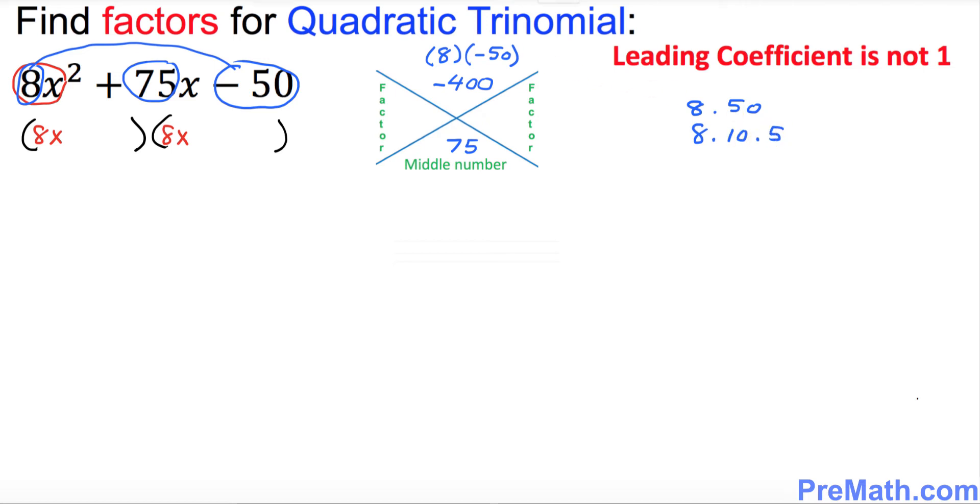Now you can simply multiply this part over here. 8 times 10 is 80, times 5. So that means 80 and 5 if you multiply we're going to get 400 and if you subtract we're going to get 75. So our two factors are going to be simply 80 and 5.